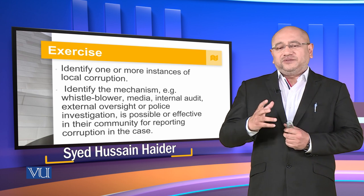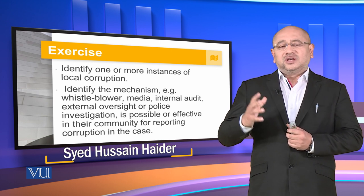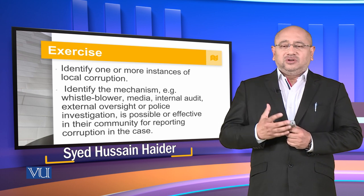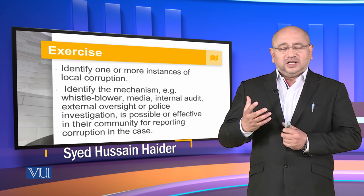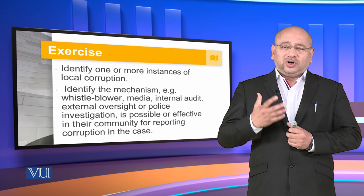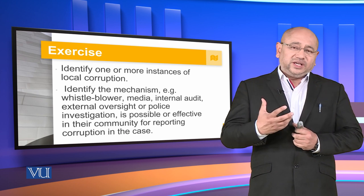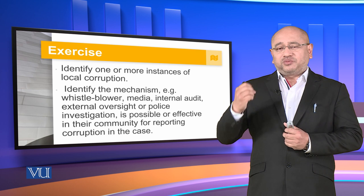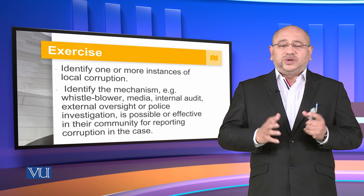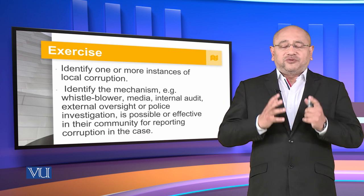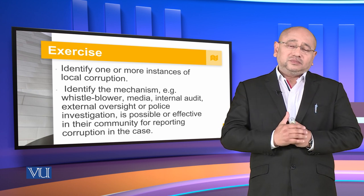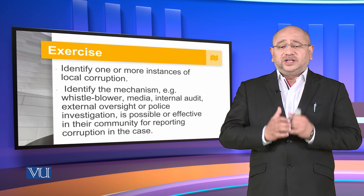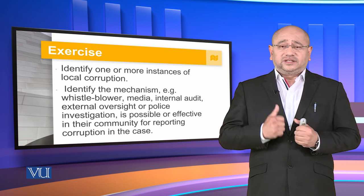The first thing that you are going to do is identify one or more instances of local corruption — anything in your community, or in the city where you are studying or working. Find an issue or a case of corruption which is well known to everyone, so at least one of them and preferably two.